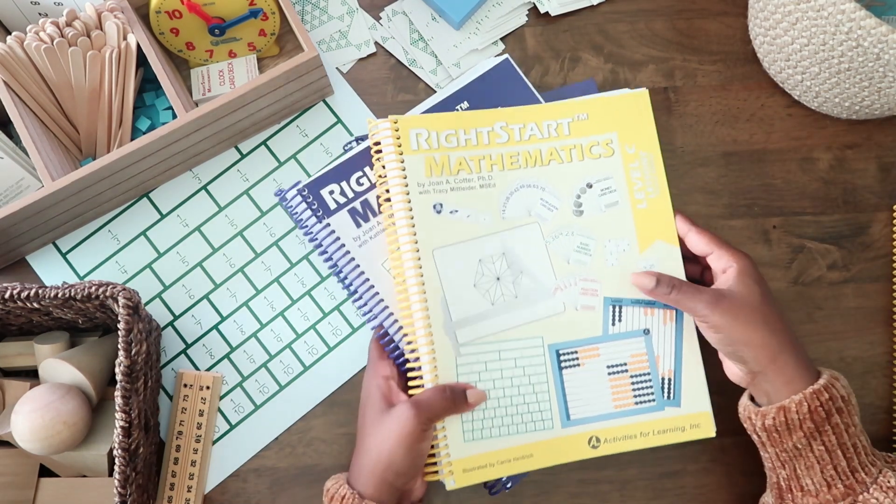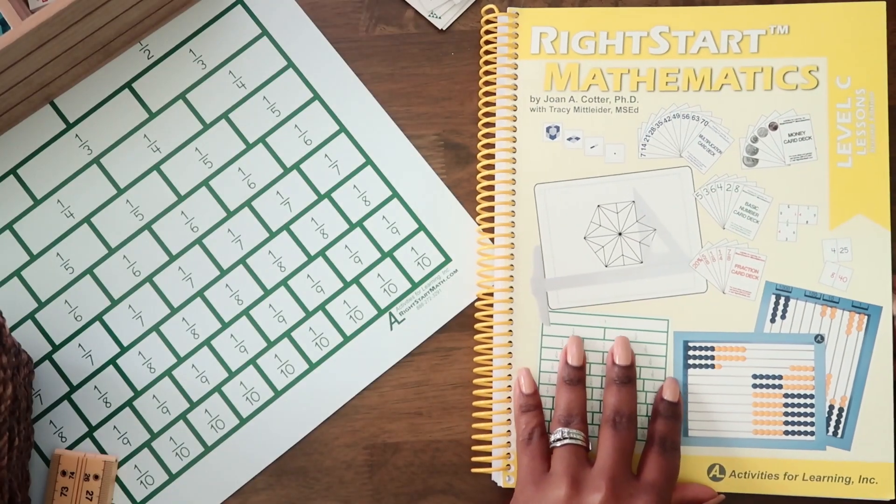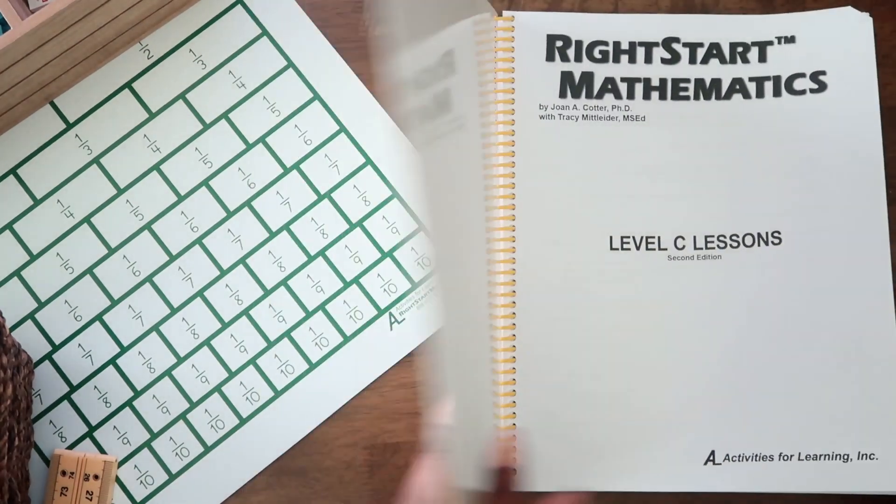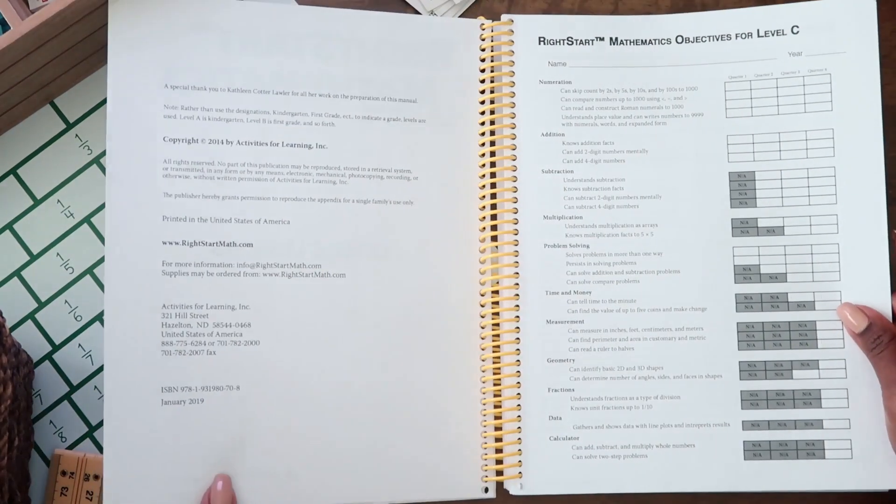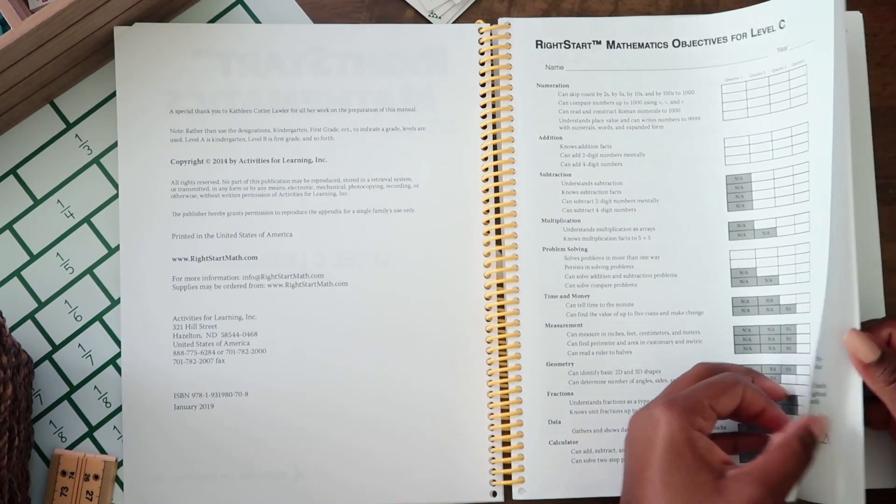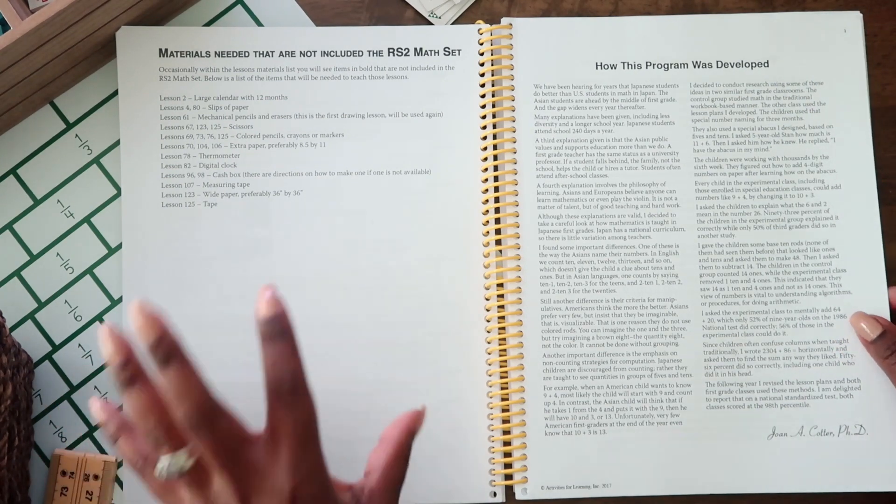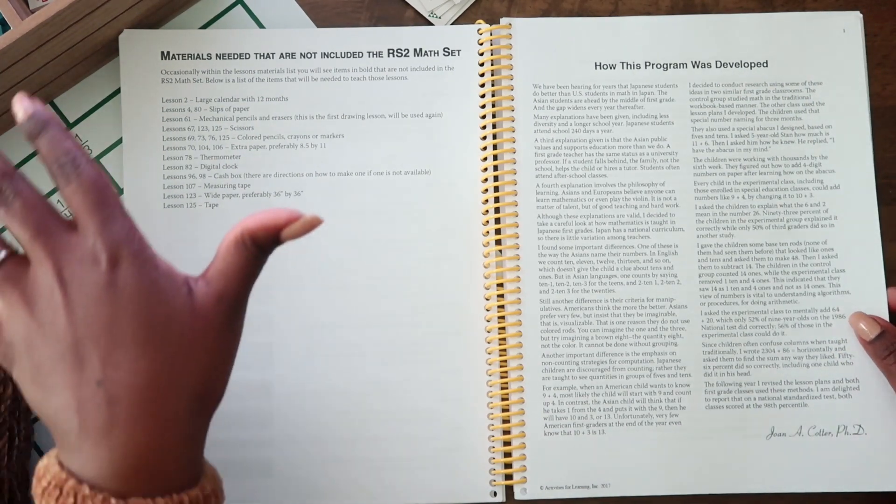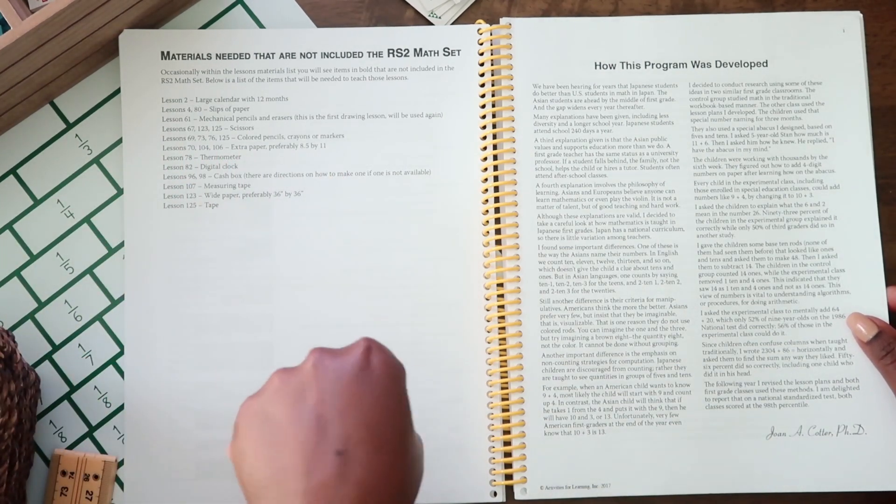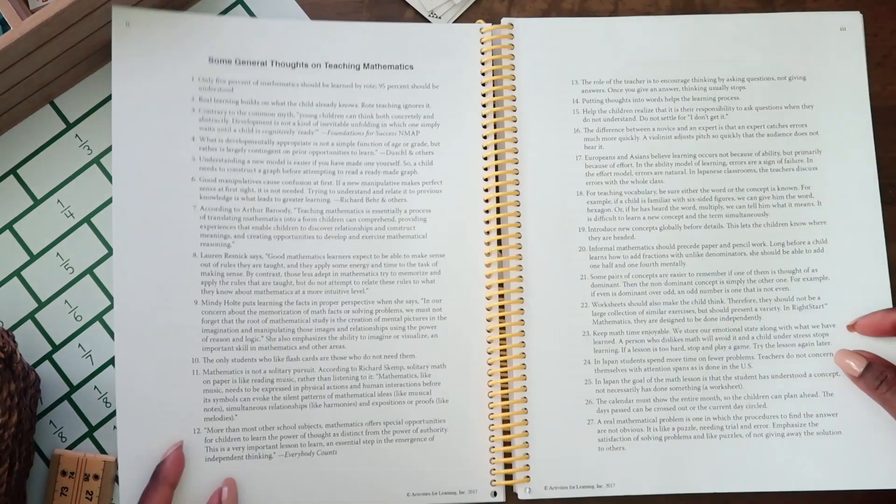So let me open up the book, this lessons book and show you now. So I thought I'd zoom in for you a little bit, but when you open it up, it shows you the objectives for this level. And then it talks about the materials that you would need outside of the manipulatives that come with it. But they're usually things you can find around the house, like a digital clock or tape.